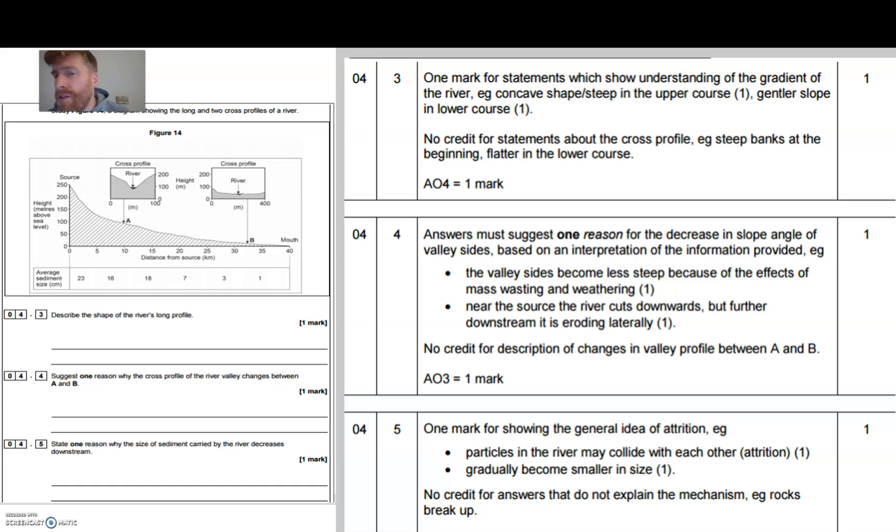There was no credit if you said anything about the cross profile or anything about steep banks at the beginning or being flatter in the lower course, because that was a cross section. So for the long profile, you should have been saying either it was a concave shape for one mark, it was steeper in the upper course, and a gentle slope in the lower course. They were three of the things you could have said for one mark.